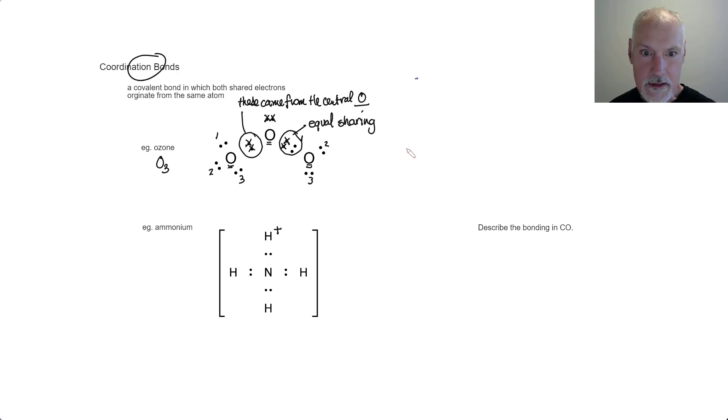This would then be an example of what I call a coordination bond, one where both electrons originate from that central atom.